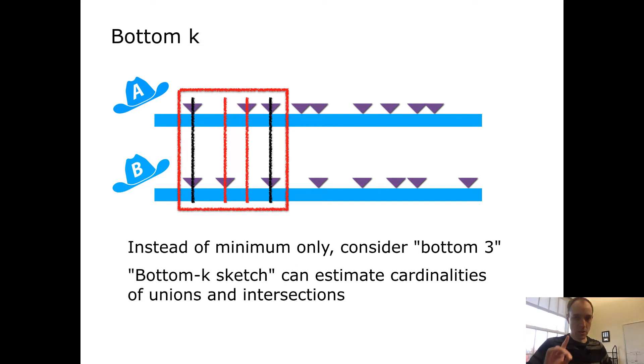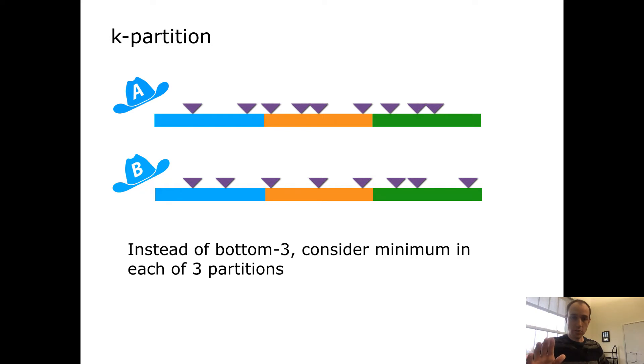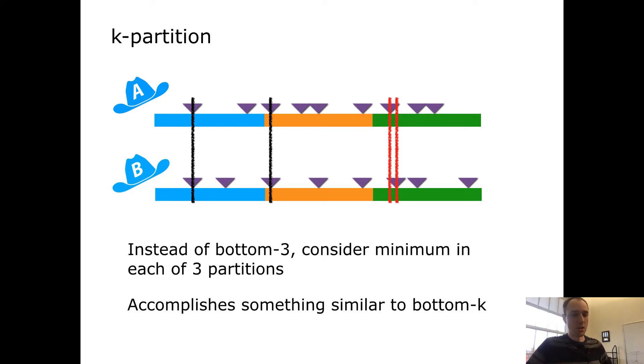Let's see one alternative to the bottom-k approach, which I'll call the k-partition approach. Here we begin by dividing the ranges into partitions. I show three different colored partitions. Now instead of taking the bottom three from both sets, I will take the minimum within each partition for both sets. Like with the bottom-k sketch, I've given myself three opportunities to observe a coincidence or a non-coincidence of the values between the two sets. I've just gone about it in a slightly different way, but that seems to accomplish much the same thing. Since k is a parameter, of course we can adjust k up or down. Making k larger leads to more representatives in the sketch, so the sketch gets bigger, but it also leads to higher resolution, greater ability to estimate these cardinalities.